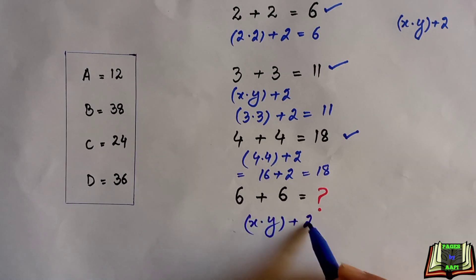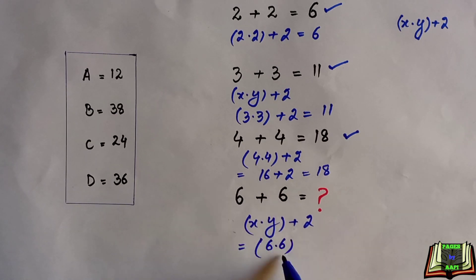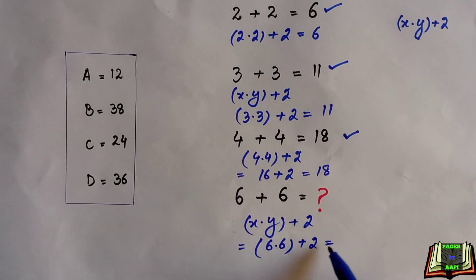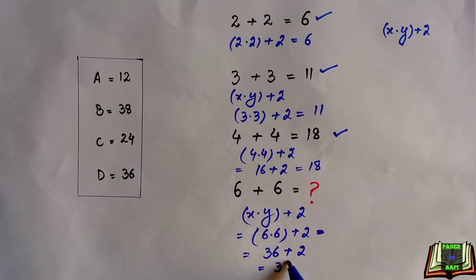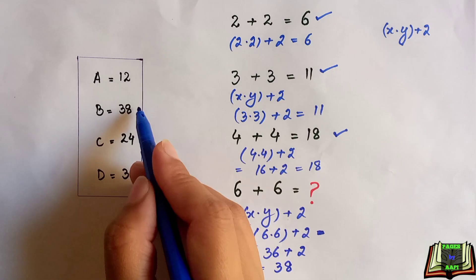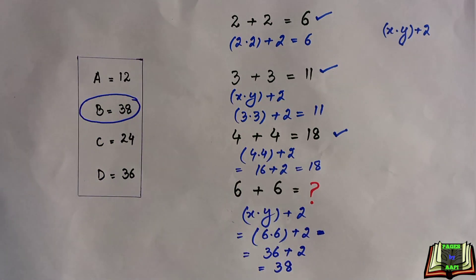We know x is 6 here and y is also 6. So 6 times 6 plus 2 — 6 times 6 is 36, plus 2 equals 38. Using this same pattern, the value of the unknown is 38, so option B is the correct answer.